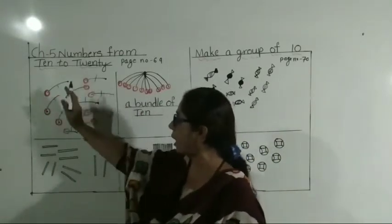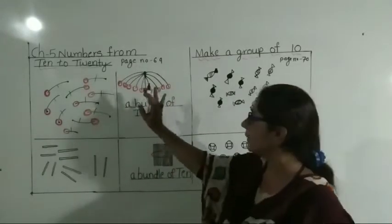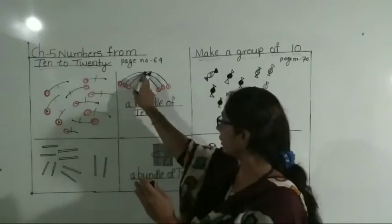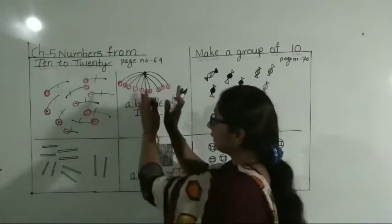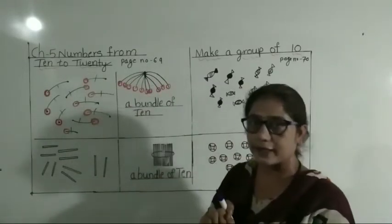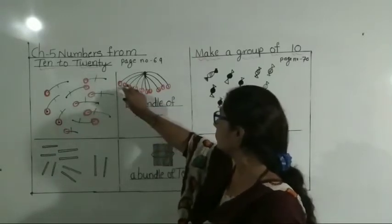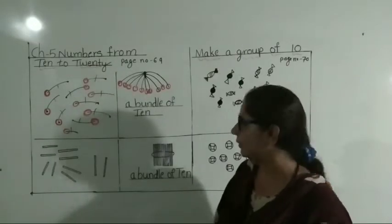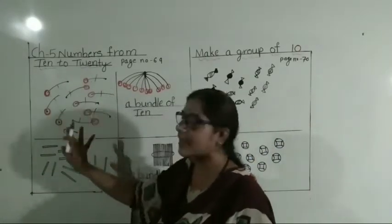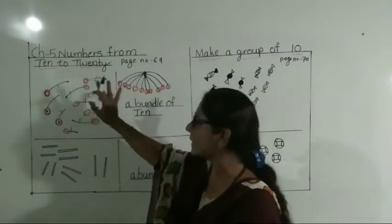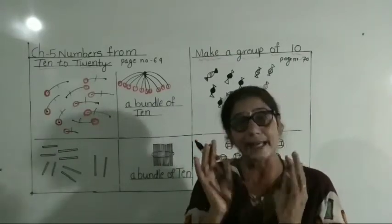10 cherries — 10 cherries alag alag padha hua hai. See here, in a bundle: 1, 2, 3, 4, 5, 6, 7, 8, 9, 10. To make one bundle, how many cherries do you need? 10 cherries — daalaega to one bundle. Means one bundle mein 10 hota hai. Understood?